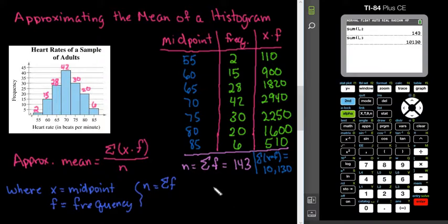And so, then to find the average mean, the x bar, we could say x bar is equal to or is approximately 10,130 divided by 143, which is approximately 70.84.